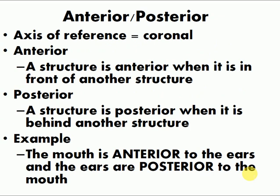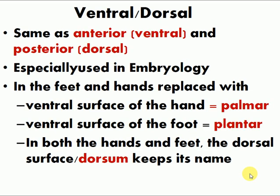Anterior and posterior use the coronal plane as axis of reference. A structure is anterior when it is in front of another structure; posterior when it is behind. For example, the mouth is anterior to the ears, or the ears are posterior to the mouth. Ventral and dorsal are used more especially in embryology as alternatives to anterior and posterior. Anterior equals ventral; posterior equals dorsal. For example, the ventral surface of the hand is called palmar, and the ventral surface of the foot is called plantar.